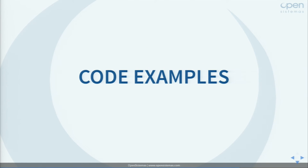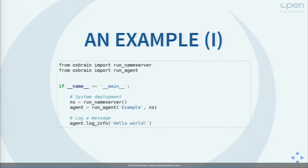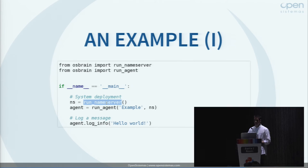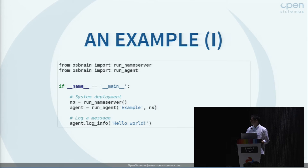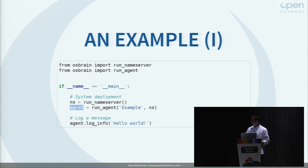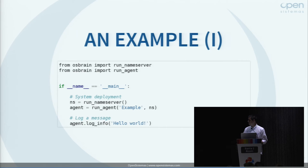Let's look at some code samples. The most basic sample is a hello world. We run a name server, then run an agent called 'example' — an alias — and tell it to register in the name server. The variable we get back is actually a proxy, not the remote object. This function starts a new process that by default binds to localhost. Using this proxy, we can call methods implemented in the remote object — for example, log_info — and say 'hello world'. This call gets serialized, sent to the remote agent, and the agent executes it.